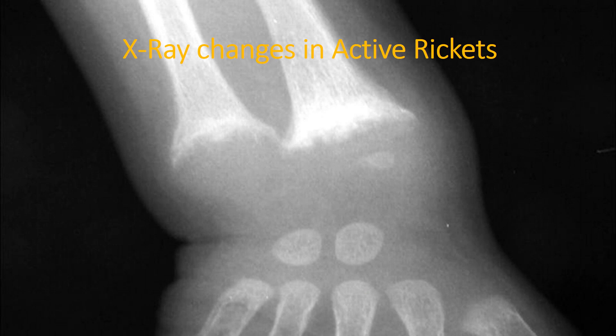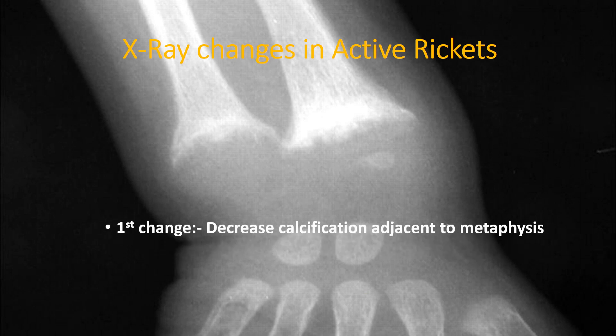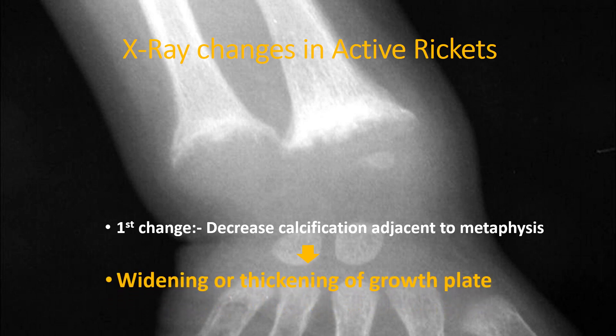In active rickets, the first x-ray change will be decreased calcification adjacent to the metaphysis. This will give rise to widening or thickening of growth plates. In this x-ray you can see that because of decreased calcification, the growth plate is widened or thickened.